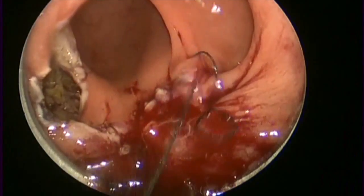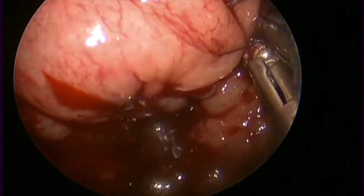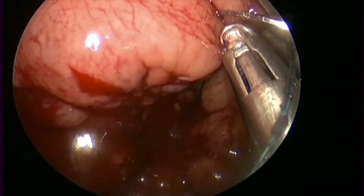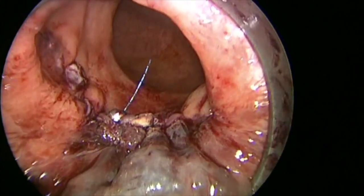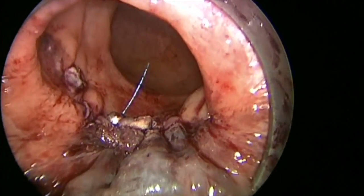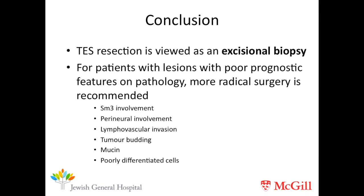Despite using self-locking sutures, as this is a high tension wound, we chose to reinforce the closure with a bead. The resulting wound is nicely re-approximated with good hemostasis. Patency of the rectal lumen is then confirmed at the end of the case. We view TES as an excisional biopsy. If there is an invasive carcinoma with poor prognostic features, we recommend further radical curative surgery.